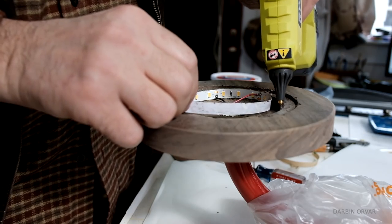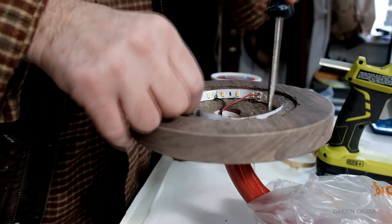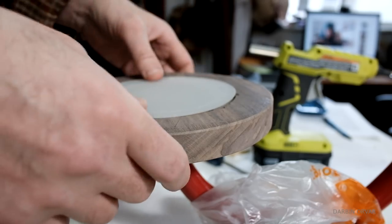Turns out it needed a little bit more glue than just the sticky back, and hot glue works great for this. And then the lexan fits perfectly inside.